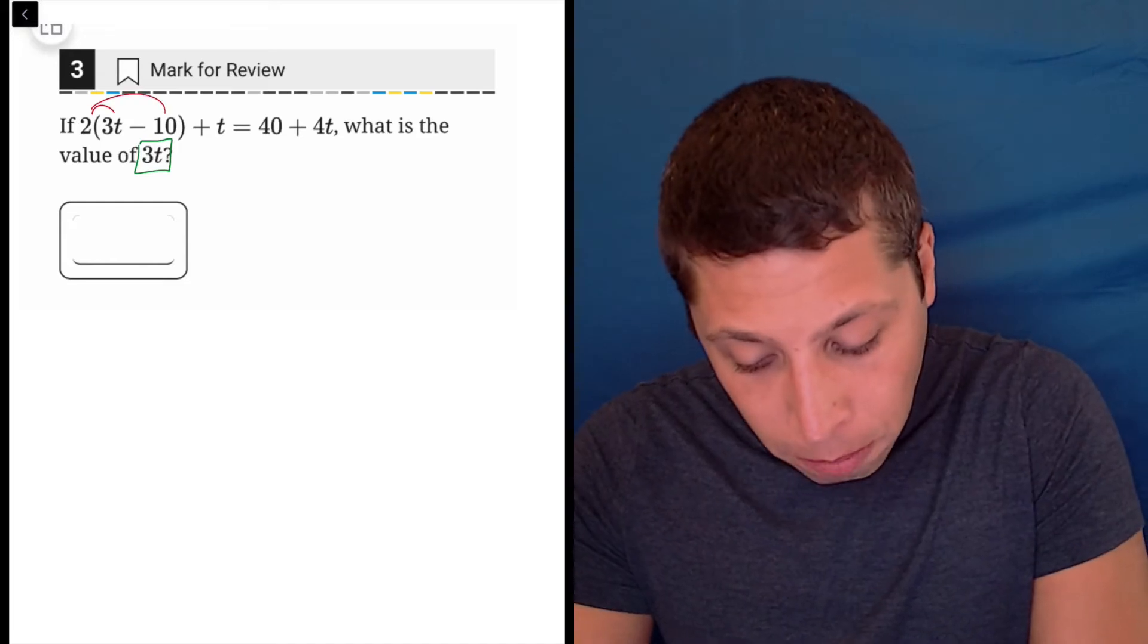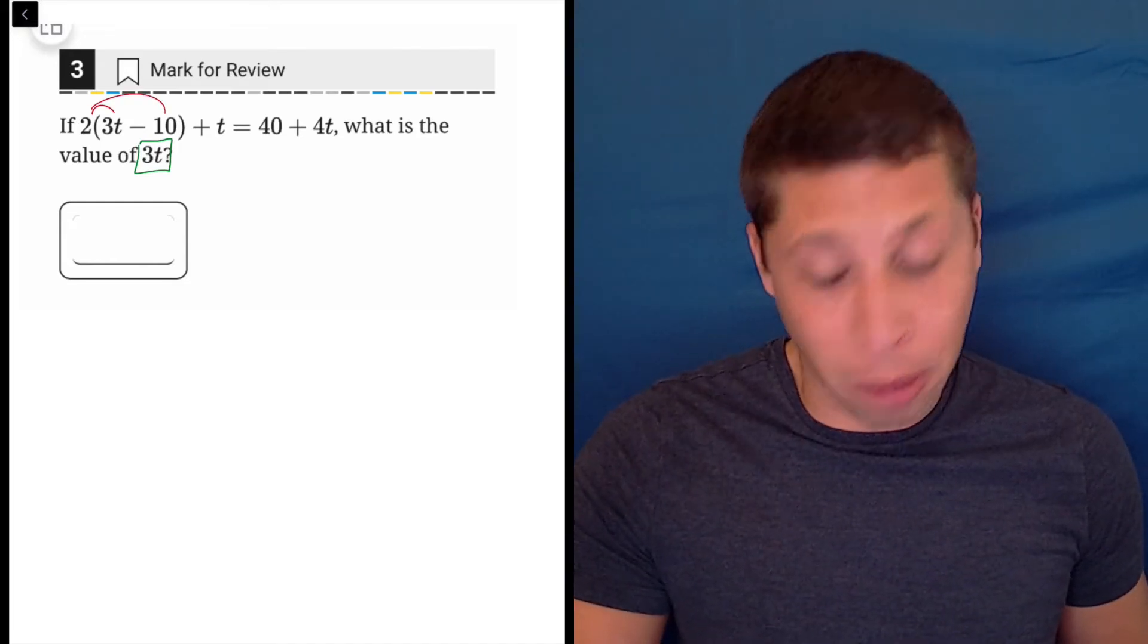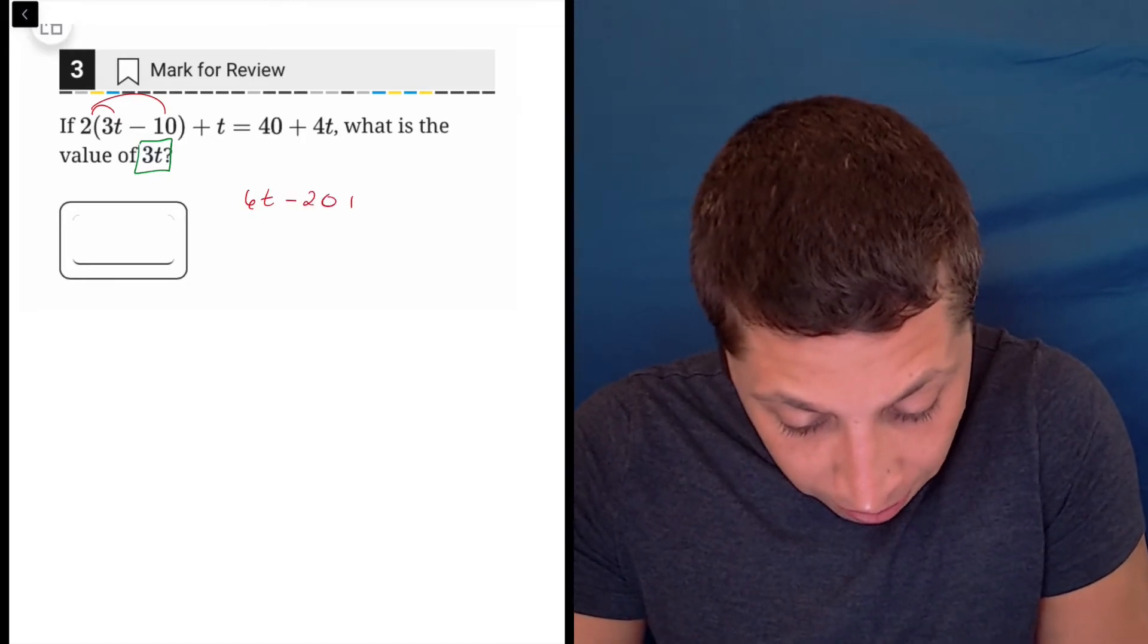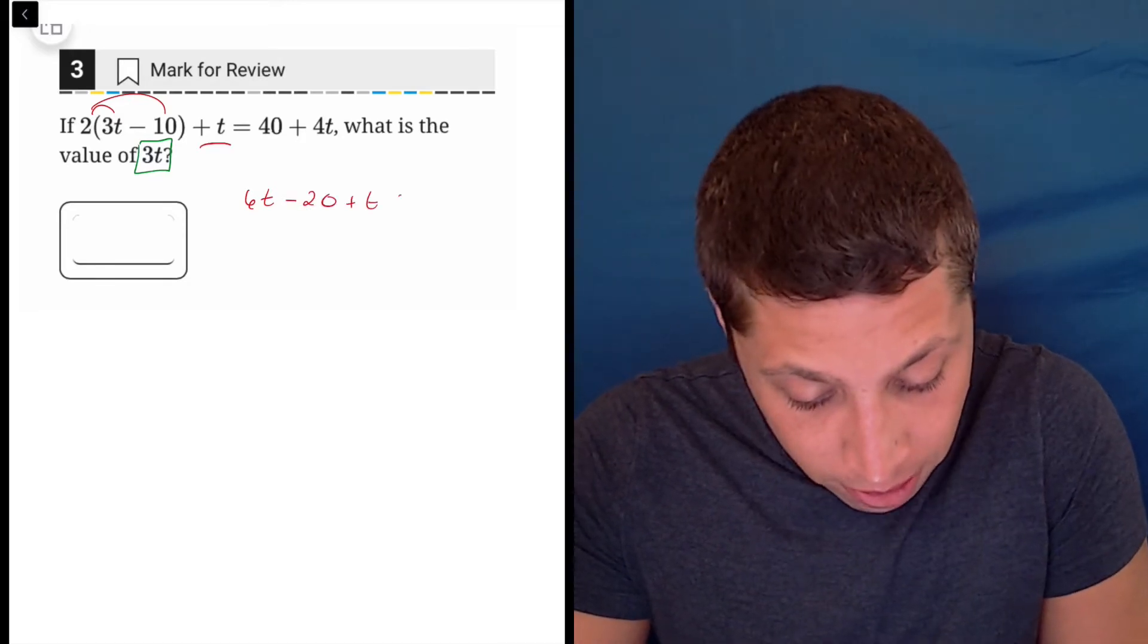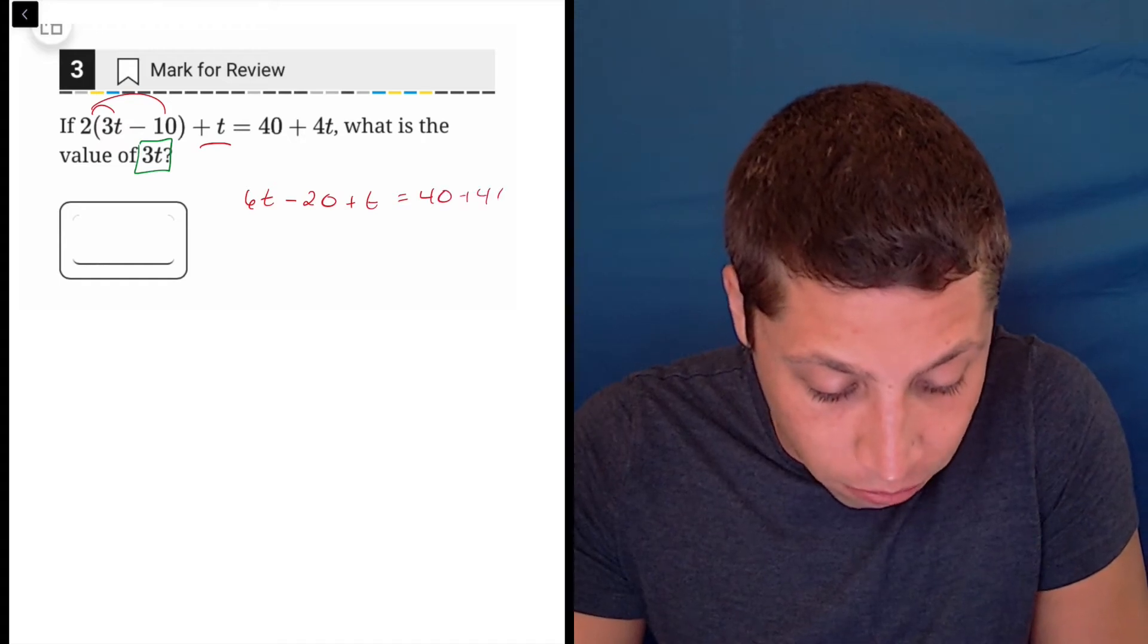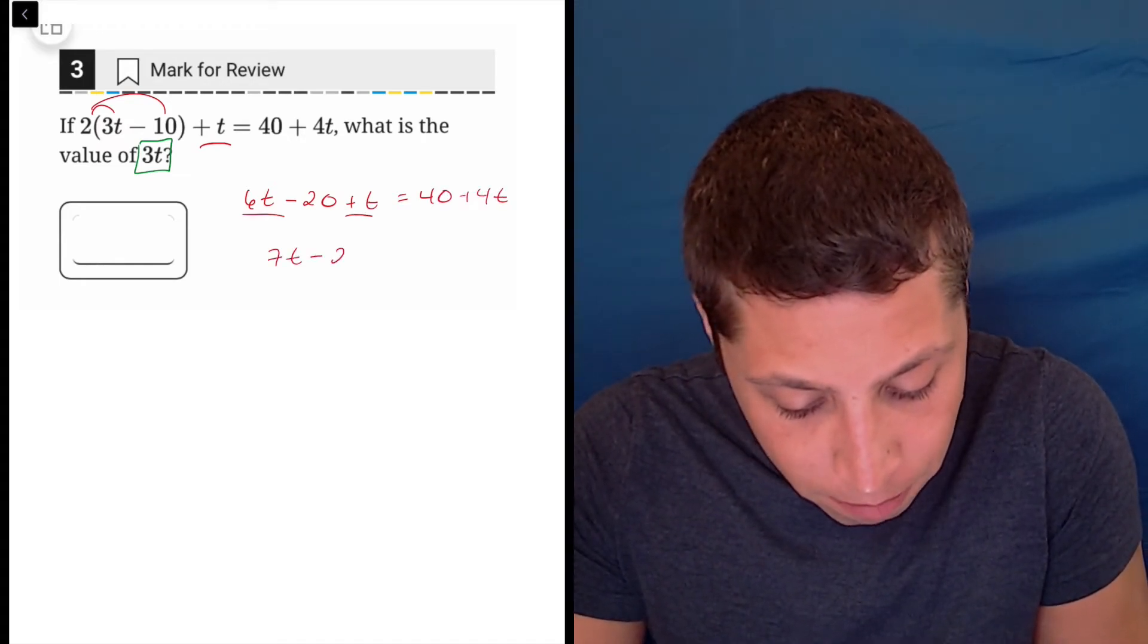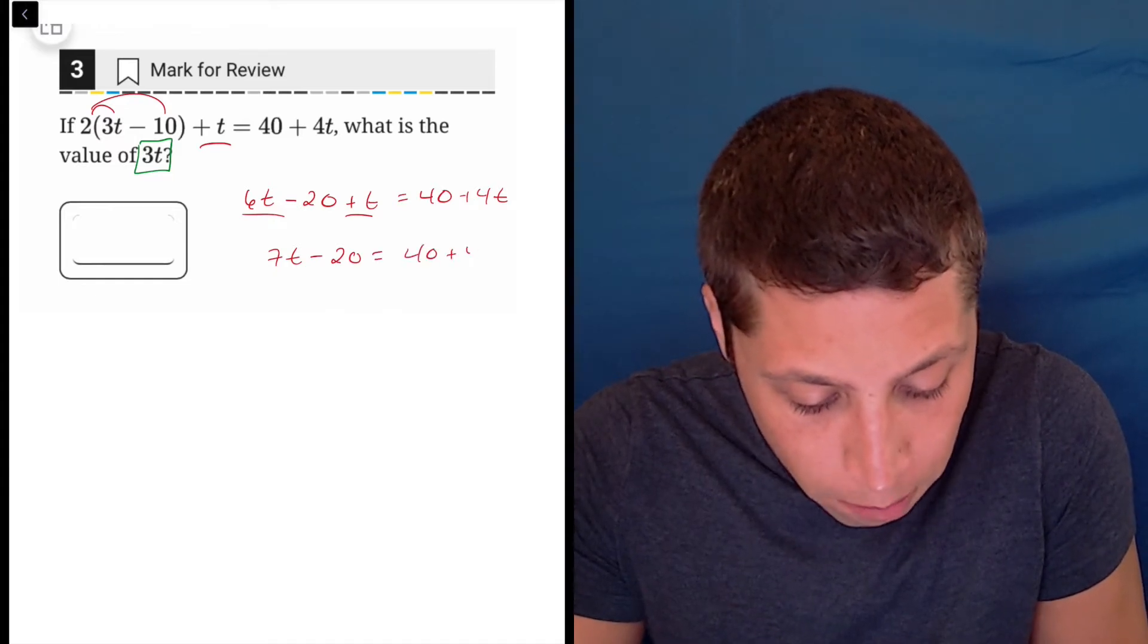In this case, I would start the algebra by distributing. So I would get 6t minus 20, and then don't forget this extra t right here, equals 40 plus 4t, and then I'd start combining like terms. So that's going to be 7t minus 20 equals 40 plus 4t.